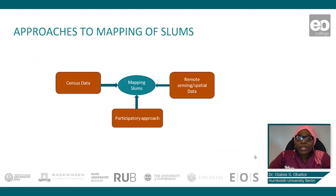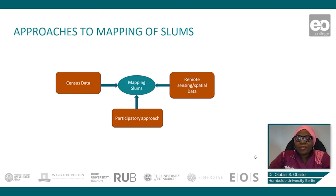We can broadly classify these approaches into three: one, the use of sensor data; two, the participatory approach; and three, the use of remote sensing and spatial data. Let us briefly describe these approaches and see how they have been used to map slums.